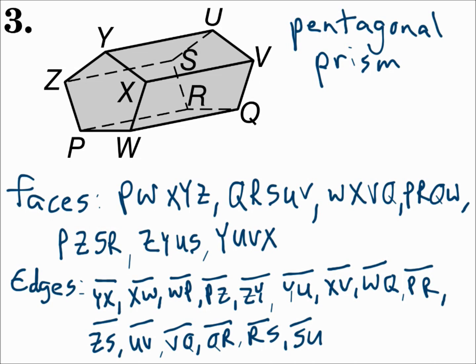The vertices are all of the points. There are ten vertices. They are P, W, X, Y, Z on the left, and Q, R, S, U, and V on the right.